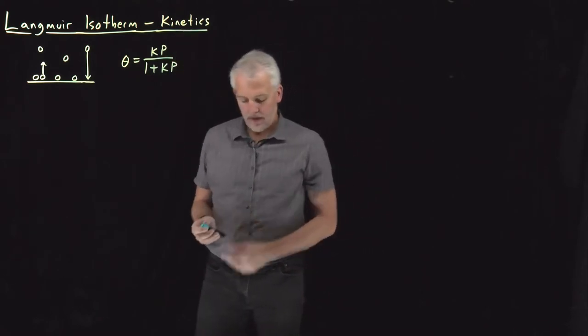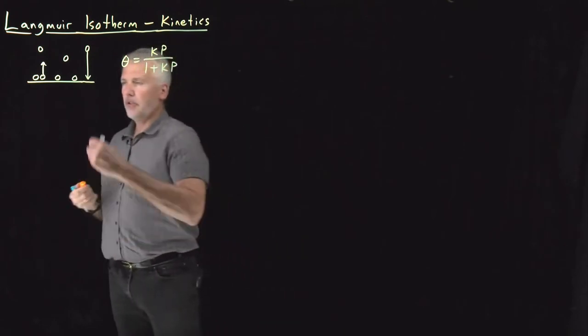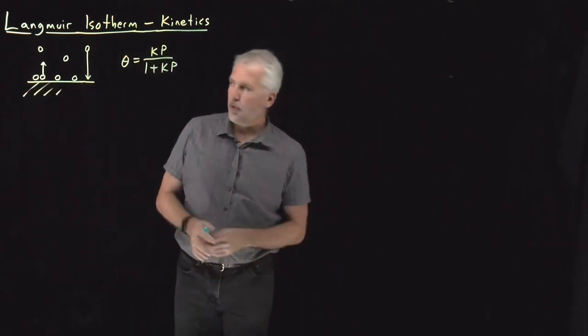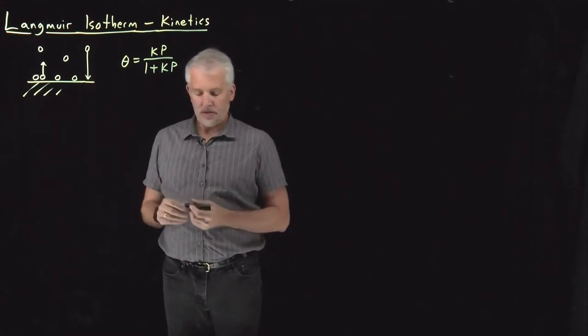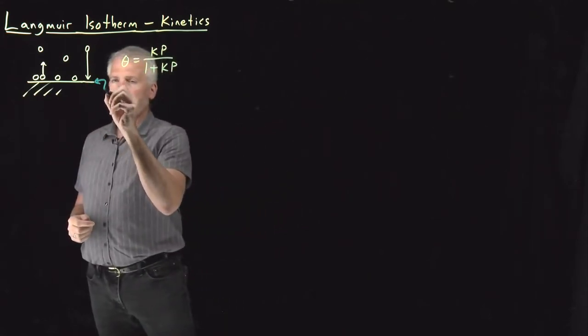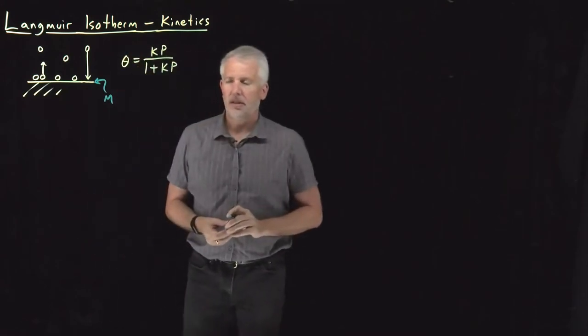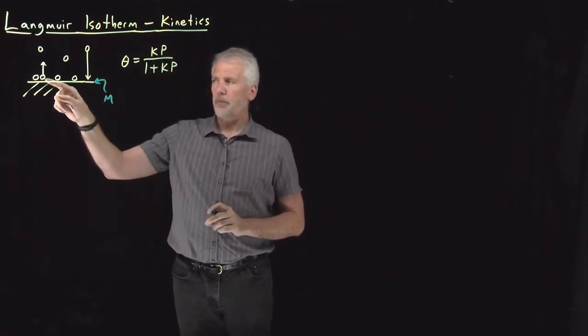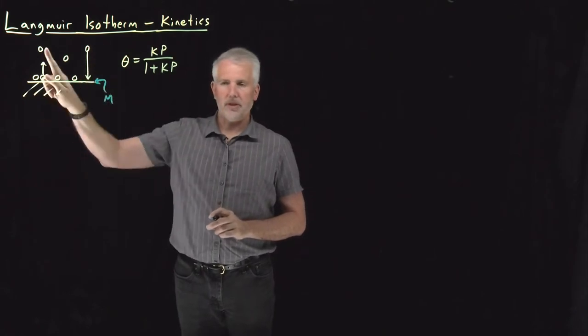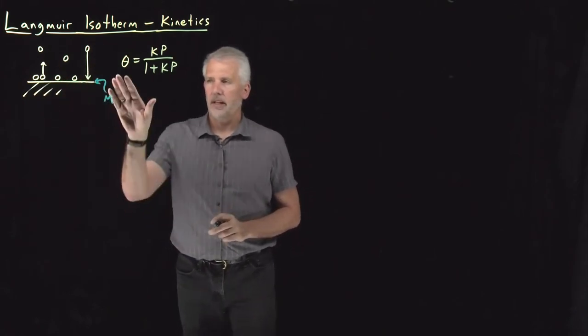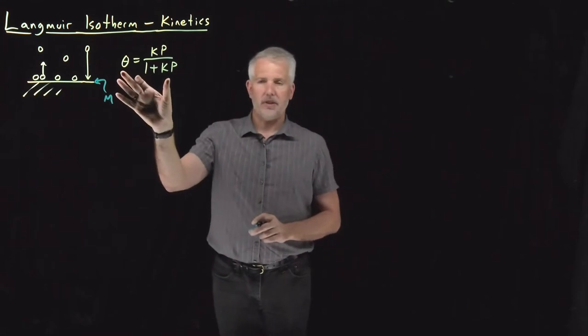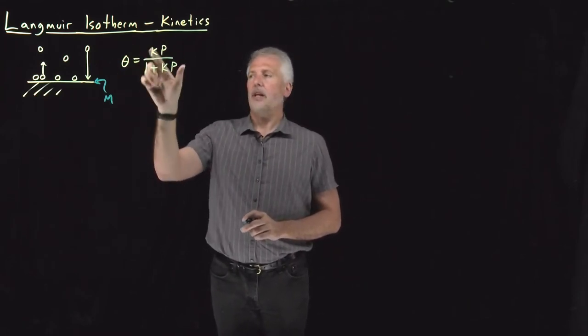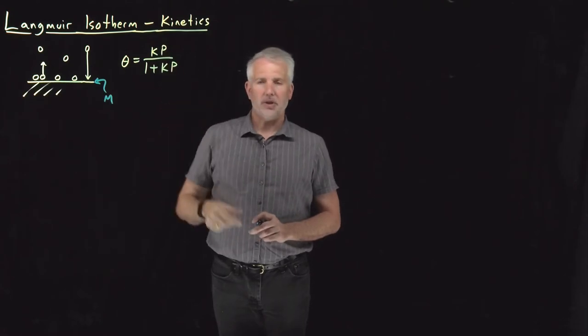So remember, we have this model where we've got a surface to which molecules can adsorb. There's some number of sites, m sites, on this surface to which these molecules can adsorb. There's an equilibrium between molecules adsorbing onto the surface and desorbing off the surface, and we expect, because we've seen where this equation comes from from a couple of points of view so far, surface coverage to depend on pressure in this way.